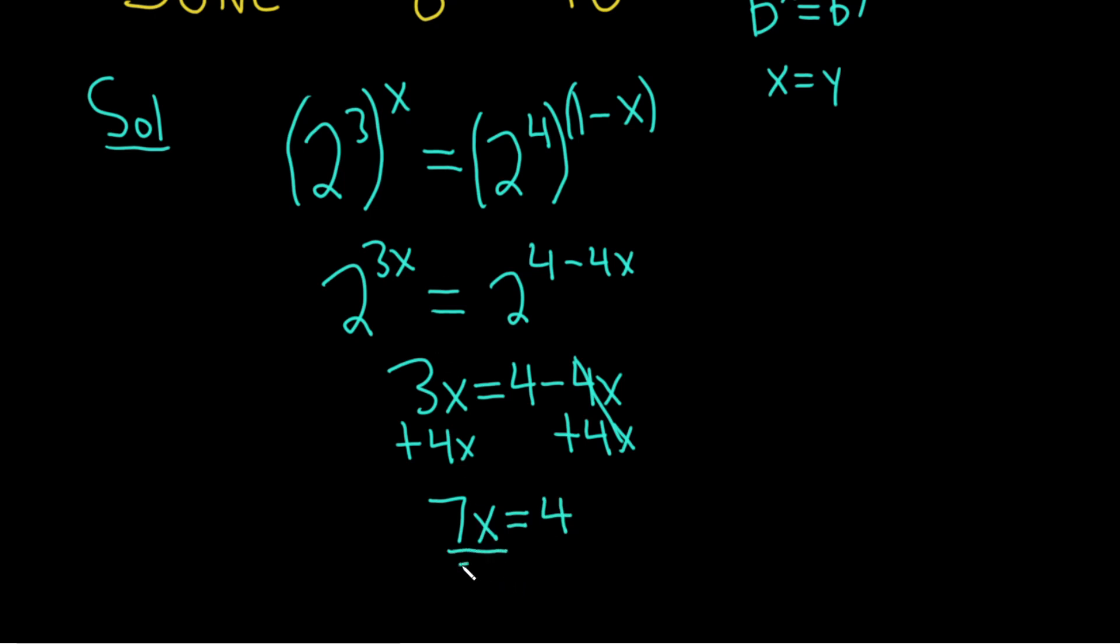Then just divide by 7. Divide by 7. So we have x equals 4 over 7. And this would be the solution to this equation.